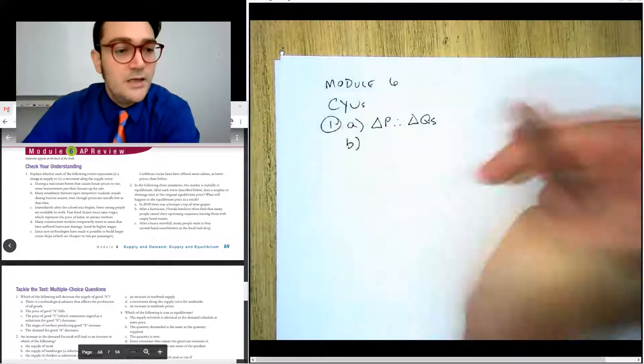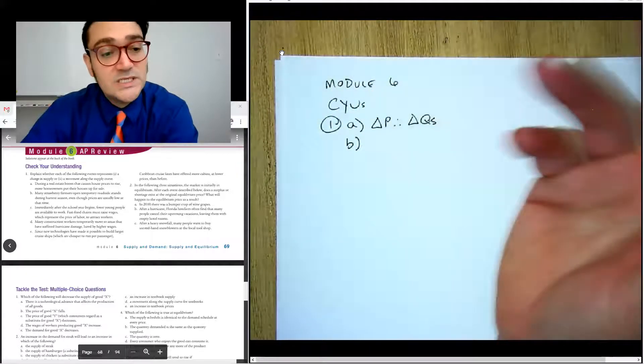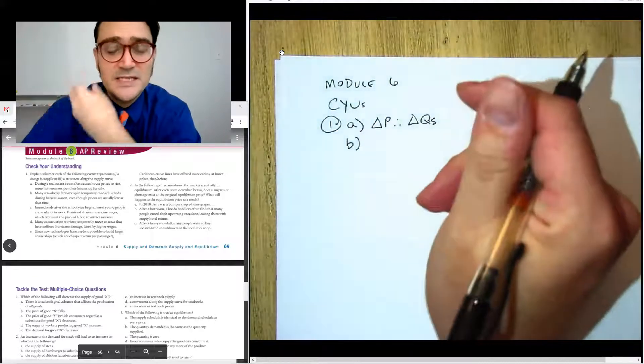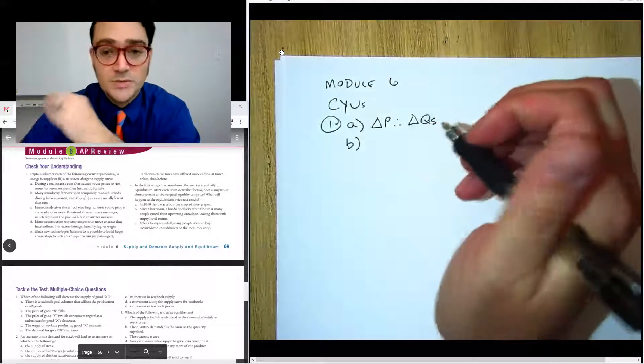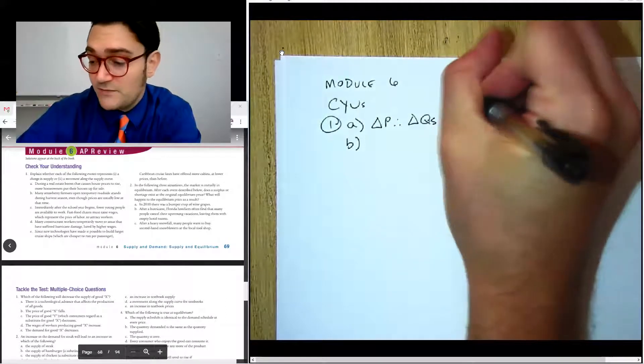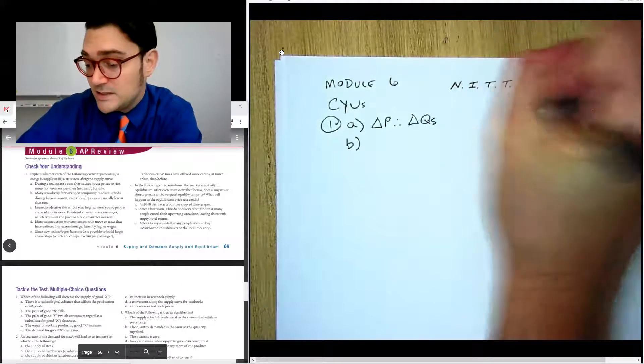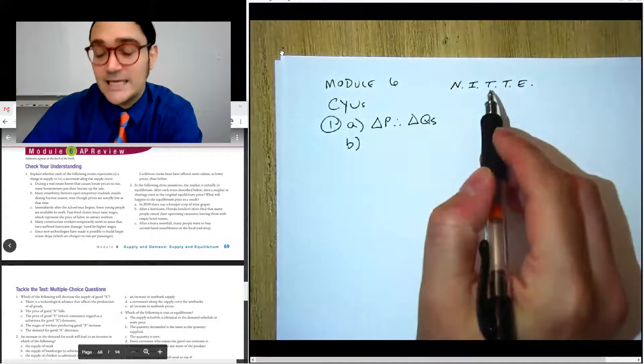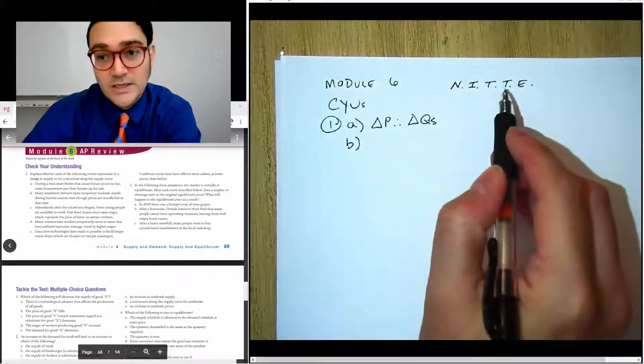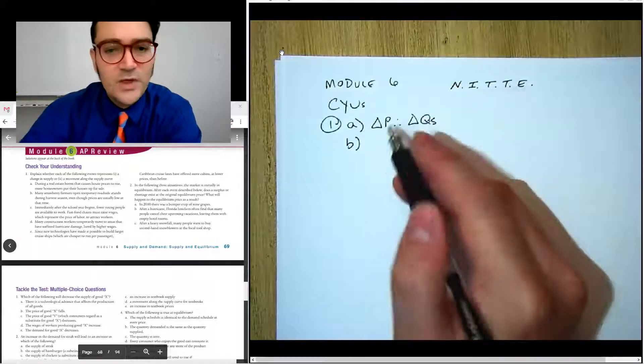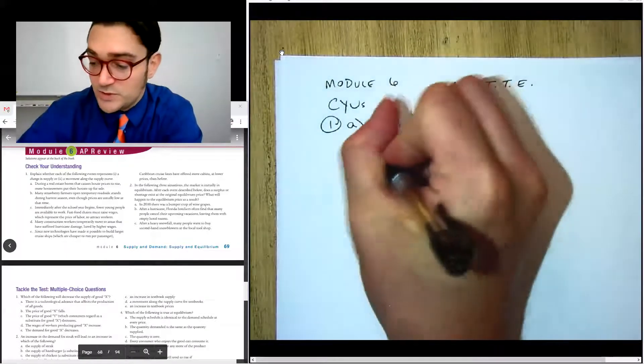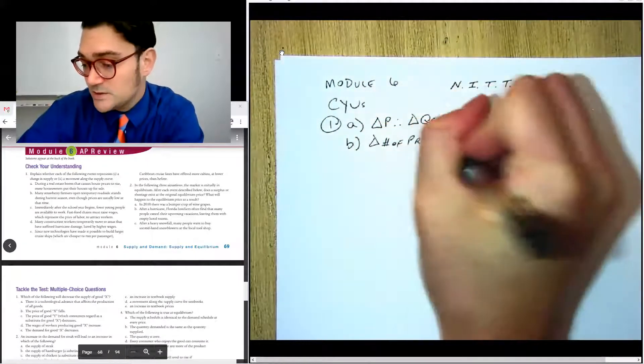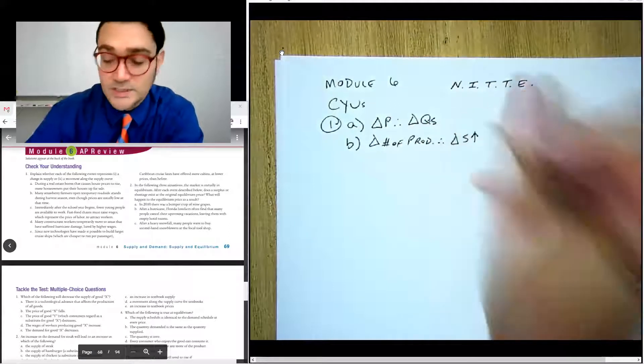For B, many strawberry farmers open temporary stands during harvest season even though prices are usually low at that time. So this one is the idea that the precipitating event is that there are a large number of producers. The number of producers, input costs, taxes and subsidies, technology, and expectations about future prices. So for this one, it's the number of producers. Change in number of producers. Therefore there's a change in supply and it's going to be an increase in supply.